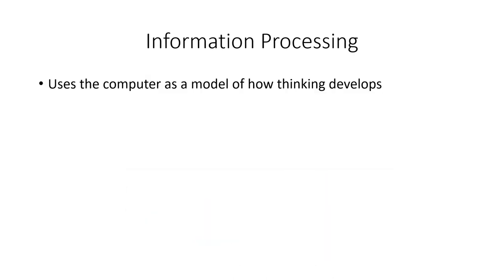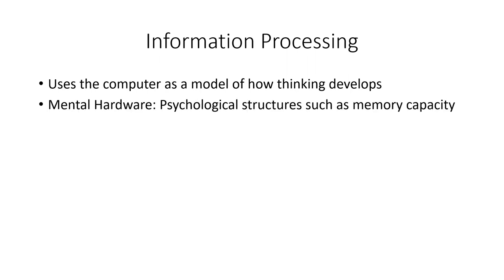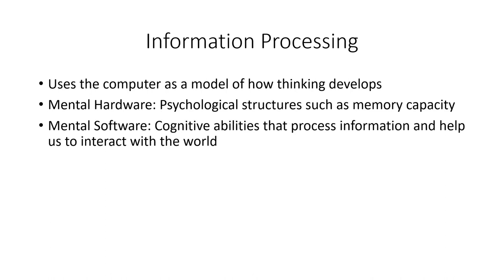The last contemporary theory is information processing. Information processing likens the brain to a computer — thinking develops in much the way a computer works. We have mental hardware, which is our psychological structures, and mental software, which includes our cognitive abilities, how we process information, and how we interact with the world. Keep this in mind when we're talking about the cognitive content — there's a lot of information processing approach that goes into the cognitive material we'll discuss this semester.